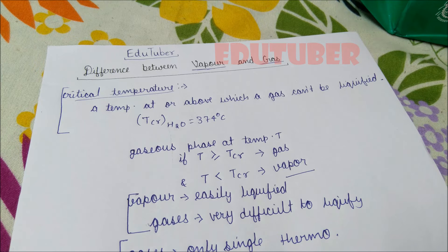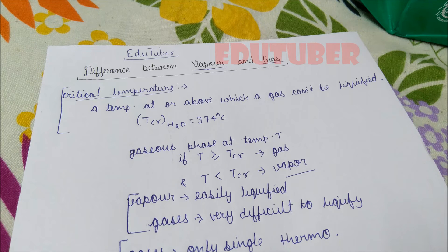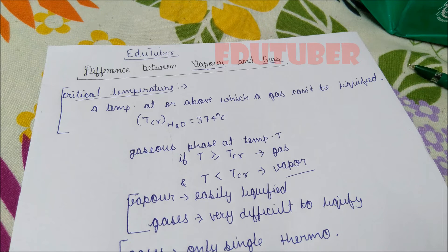What critical temperature sets as the boundary is: above 374°C, however much you increase the pressure — even by 100 or 200 times atmospheric pressure — you cannot liquefy the gas. So above critical temperature, substance exists in gaseous phase that cannot be liquefied by increasing pressure. Below critical temperature, we can easily liquefy the gas.